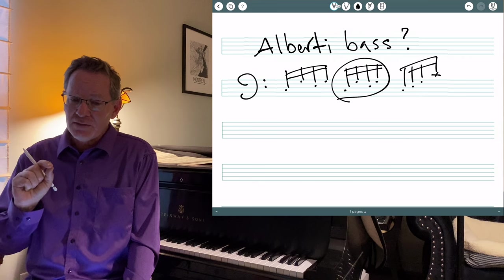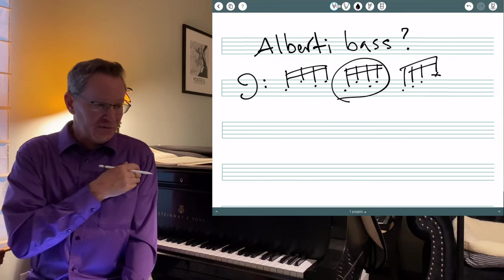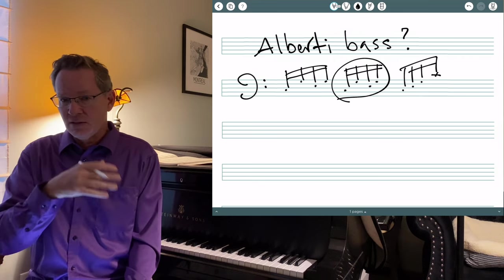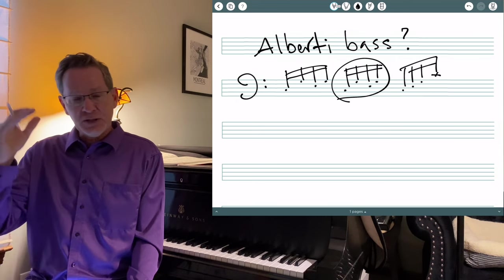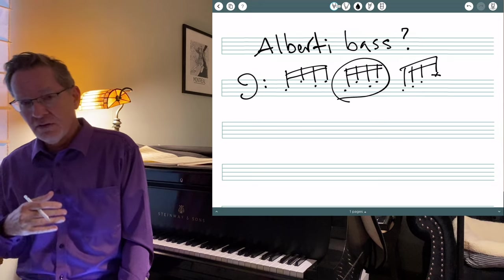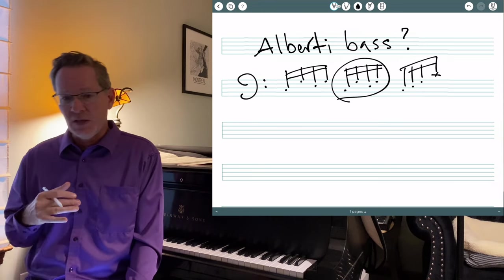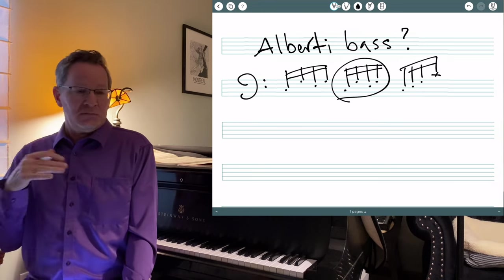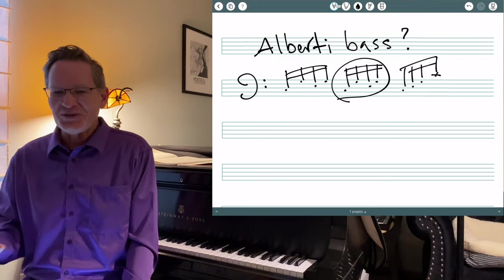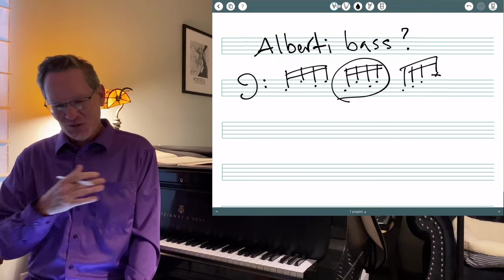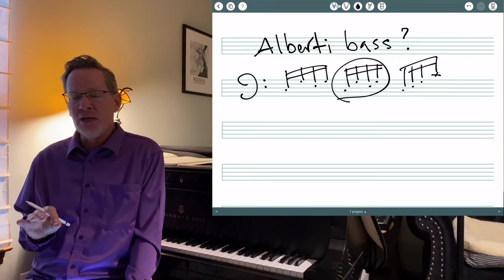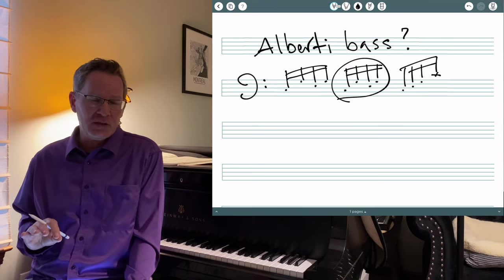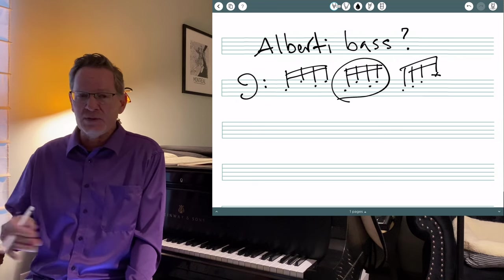One, because for every measure of piano music, there's only a bass and a treble staff, but for every measure of strings, there are typically five staves. First, second violins, violas, cellos, bass. So there's two and a half times as much notes to write for the same duration of music. Also, the strings dominate in most orchestral music, in concertos, in symphonies, in operas.